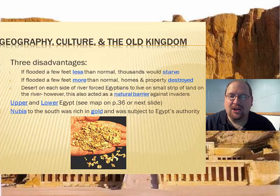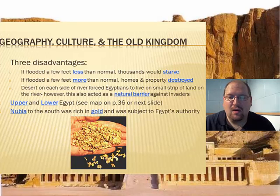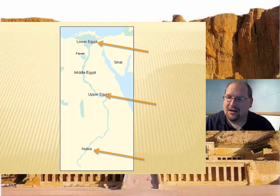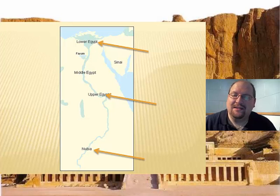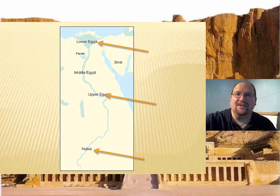As you just saw on the map, Egypt was split into upper and lower Egypt. What the map didn't show you was that there's a third area called Nubia, which is even further south. What made Nubia special was that it was rich in gold. Eventually a king would take over Nubia and the southern part of Egypt and be in control of all populated regions of Egypt, creating the world's first empire.